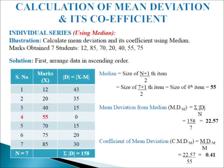Mean deviation from median: MDM = sigma D / N = 158 / 7 = 22.57. Coefficient of mean deviation: CMD(M) = MDM / M = 22.57 / 55 = 0.41. This is how we calculate mean deviation and its coefficient in individual series using median.